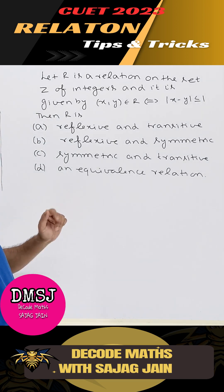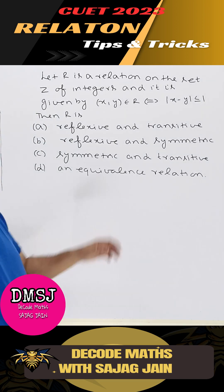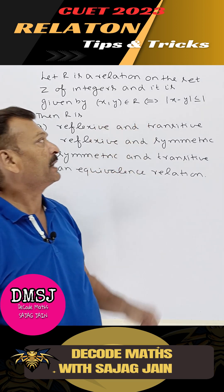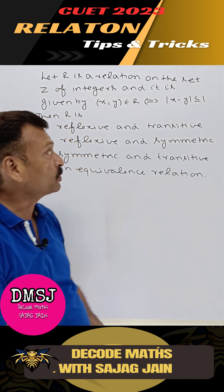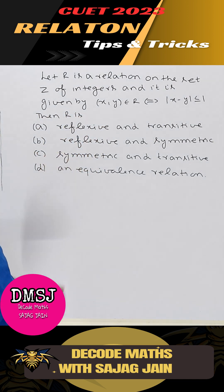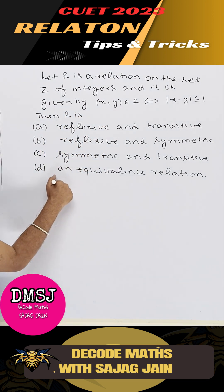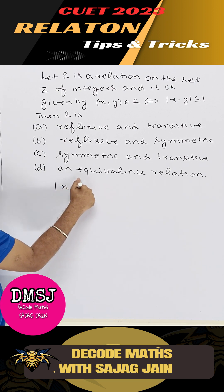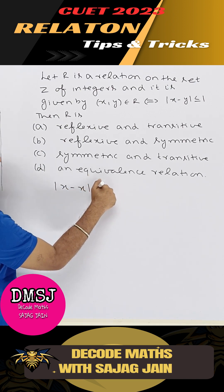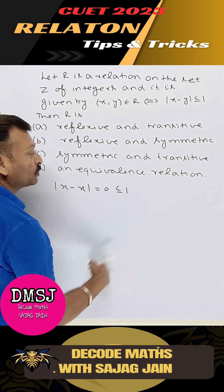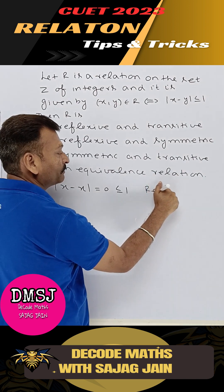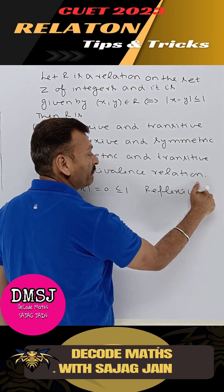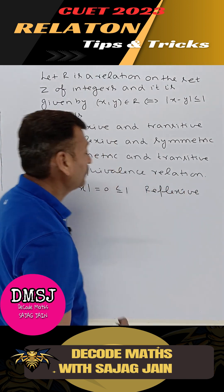Let R be a relation on the set Z of integers, given by (x, y) ∈ R if and only if |x - y| ≤ 1. To check reflexivity: |x - x| = 0, and 0 ≤ 1. So it means this is reflexive — x is related with x.